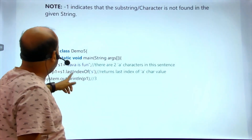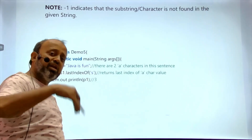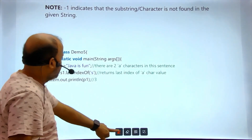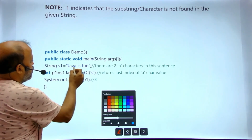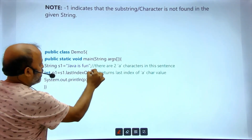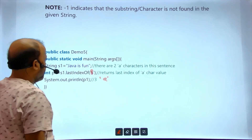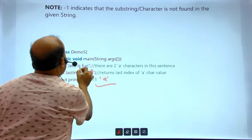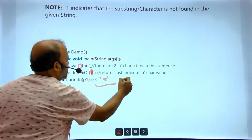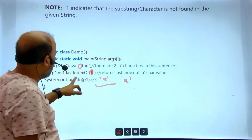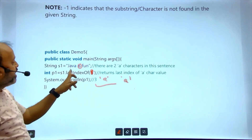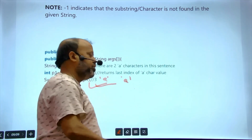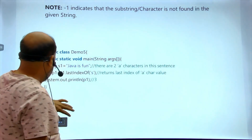Now, lastIndexOf() works the same as indexOf() but finds the last occurrence. For example, with string 'java is fun', lastIndexOf('a') gives you the last 'a' — counting from 0: positions 0, 1, 2, 3 — you get position 3. So lastIndexOf() returns the last position of a character in the string.